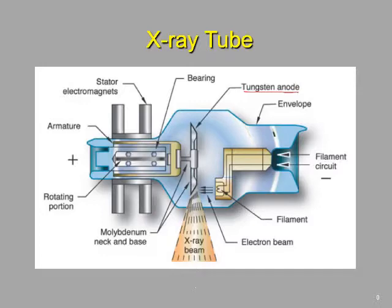The anode is made out of tungsten. Tungsten has a very high melting point and a high Z number, which is helpful because what we're trying to do is give the electrons that we're producing with the cathode something very dense to collide into. That high Z number is helpful because it speaks to how dense the material is.